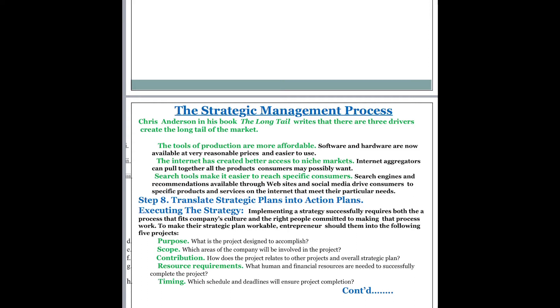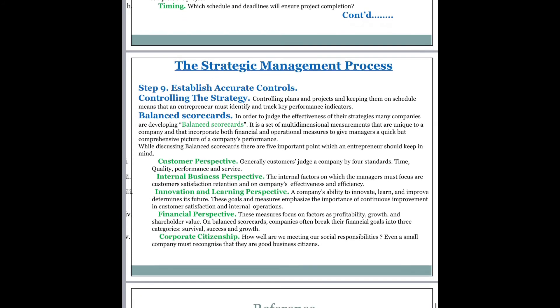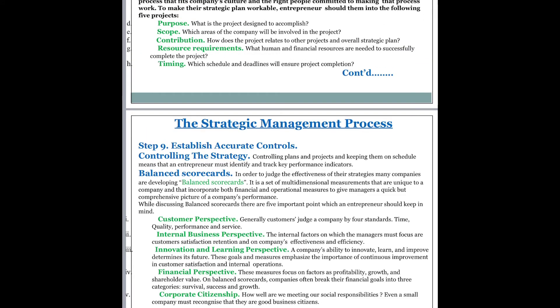Timing is also important for all projects — that is, which schedule and deadlines will ensure project completion. If you do not clearly maintain a timeframe or timeline, or don't have targets and deadlines, you will not be able to complete your project on time and gain profit from it. The ninth step is establishing accurate control: controlling plans and projects and keeping them on schedule means that an entrepreneur must identify and track key performance indicators.